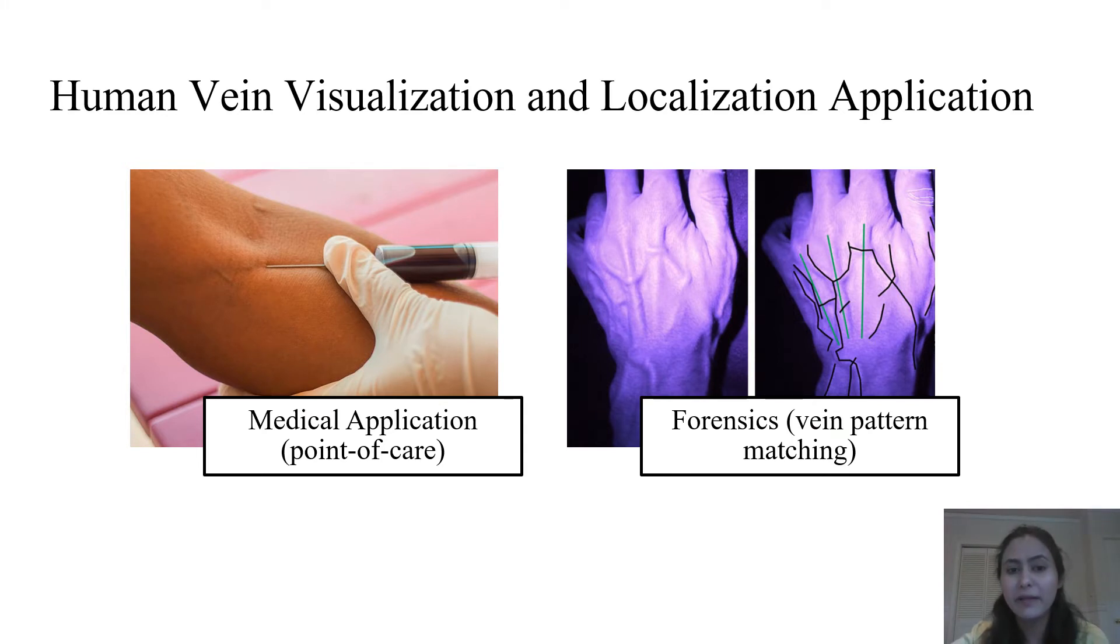We show the potential of our method by developing a human vein visualization and localization application that uses only regular RGB images. Vein visualization is important for various point of care applications. One important application is needle insertion which is widely used for blood sample collection and anesthesia injection during major surgeries. Vein visualization is also gaining popularity in forensic applications. Although various biometric systems are available for commercial and government applications, in some forensic cases, recognizing skin texture and identifying vein patterns may be the only option left to identify the culprit.